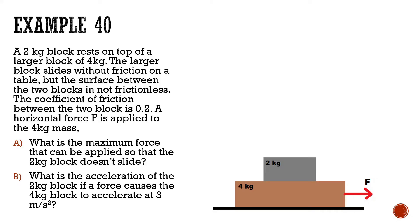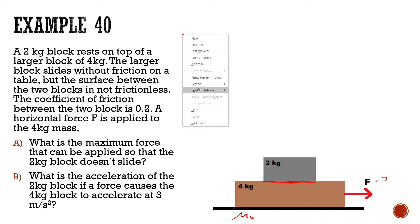Let's look at this problem: a two kilogram block rests on top of a larger block of four kilograms. The larger block slides without friction on the table — no friction down here — but the surface between the two blocks is not frictionless. The coefficient of friction between the two blocks is 0.2. A horizontal force F is applied to the four kilogram mass. What is the maximum force that can be applied so that the two kilogram block doesn't slide?